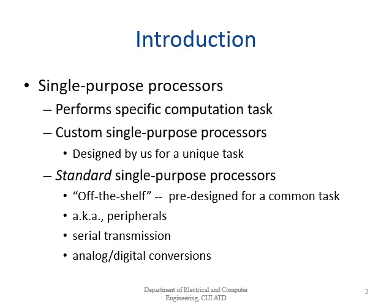Standard single-purpose processors are off-the-shelf, pre-designed for common tasks. Most are known as peripherals. Serial transmission is another type of standard single-purpose processor, and so is the digital-to-analog converter. All of these — A-to-D, serial transmission, and peripheral devices — are types of standard single-purpose processors.